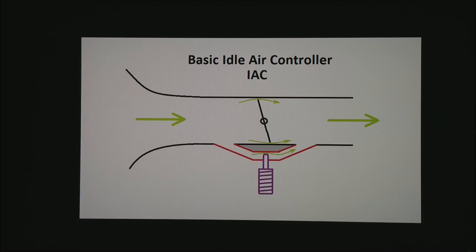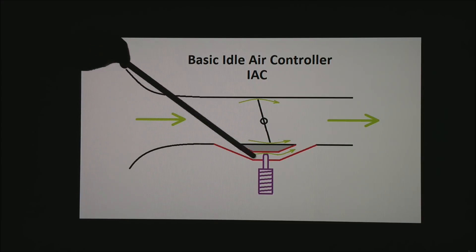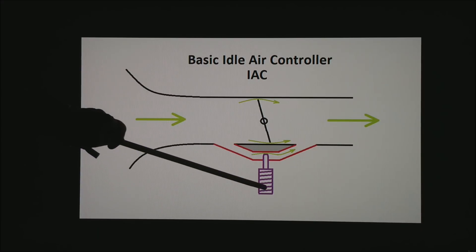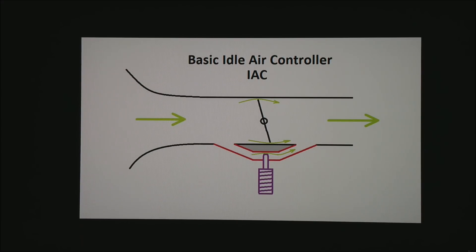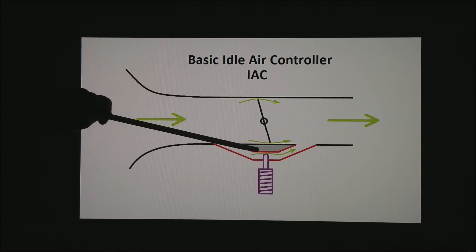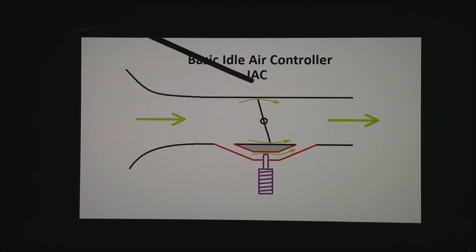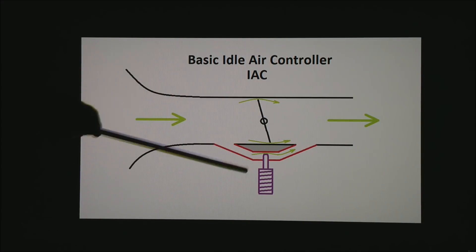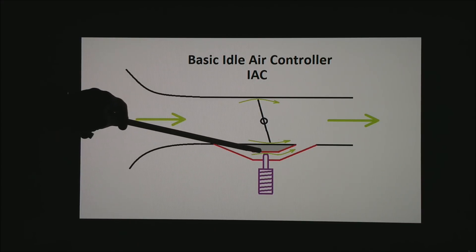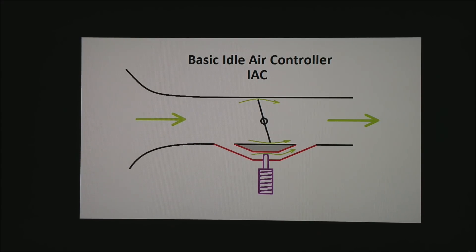An idle air controller or IAC is basically a controlled air leak past the throttle bodies. This is typically a solenoid of some sort, possibly a stepper motor. As the ECU opens and closes this little gate, a little more or a little less air goes around the bottom bypassing the throttle blades. This device can be all sorts of different designs — two wire, three wire, four wire, stepper motor, solenoids — but they all essentially do the same thing: they open a little bit if the idle speed is low and they close down if the idle speed is too high.